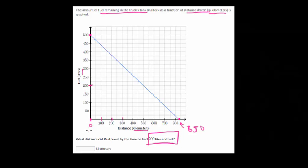And the question is, what distance did Carl travel when the truck only had 200 liters left in it? So we got to go over to our blue line here. So I'm just going to draw a dash line to see where it intersects. It looks like right here. And we can see that at that point, Carl had driven 500 kilometers.